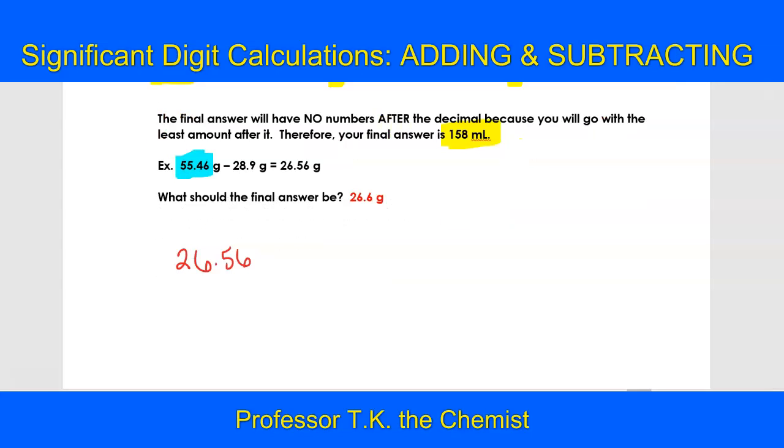So if I write out 26.56, I know that I have one significant digit that should be after the decimal. This six right here tells this five to go up to a six.